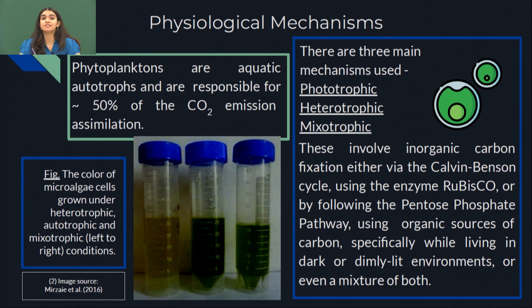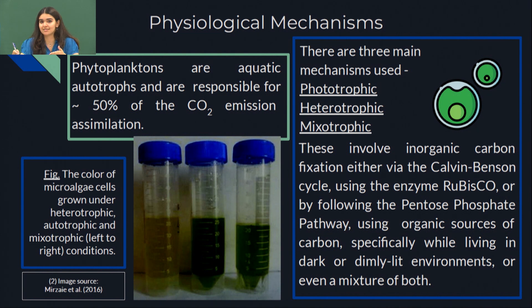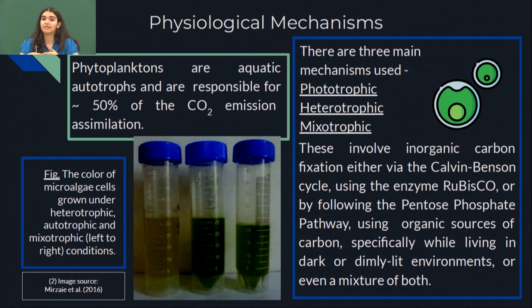Such storage is done via three main mechanisms. The first is phototrophic in nature. This is the most common one, and the Calvin cycle is generally followed, which involves an enzyme known as ribulose-1,5-bisphosphate oxygenase carboxylase — more commonly known as rubisco. This enzyme, rubisco, is capable of converting carbon dioxide into phosphoglycerides, thereby reducing its content from the atmosphere when present in algal cells.